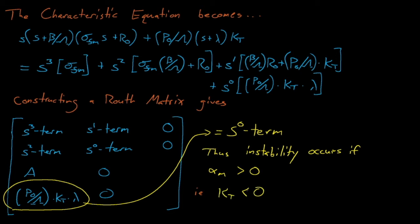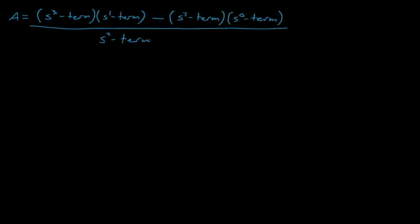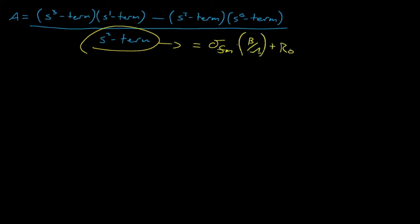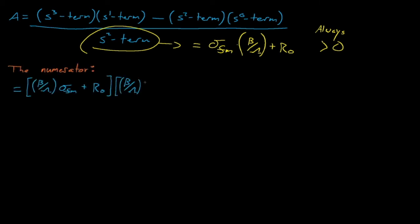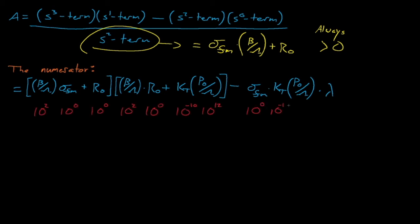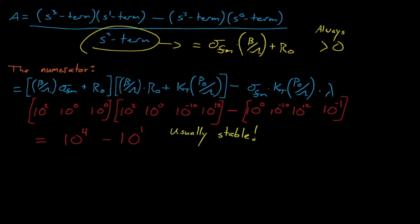This probably isn't very surprising news. One of the key goals when designing a reactor is to ensure that it has a negative moderator reactivity feedback coefficient, but it's useful to have confirmed why this is a design priority using our stability analysis. Lastly, we'll discuss the 'a' term and see under which conditions it will become negative. 'a' is equal to a combination of the s-cubed, s-squared, s, and s-to-the-zeroth-power coefficients. The s-squared term, which equals sigma-fm times beta divided by lambda plus r-naught, can only be positive, so the only way this expression can become negative is if the numerator is negative. If we apply an order of magnitude analysis, we see that the numerator roughly equals some 10-to-the-fourth power term minus a 10-to-the-first power term, meaning that a reactor with a negative moderator reactivity coefficient will generally be stable.